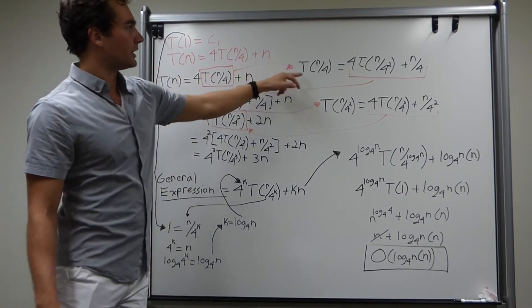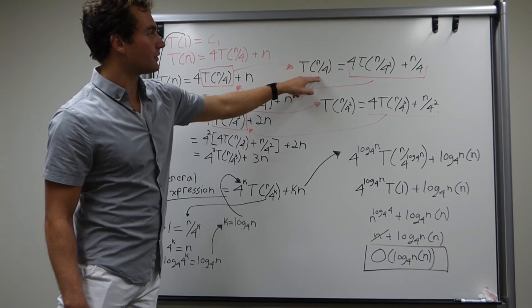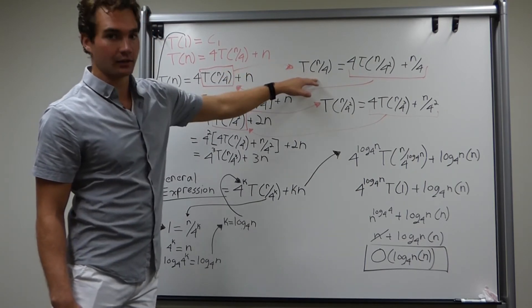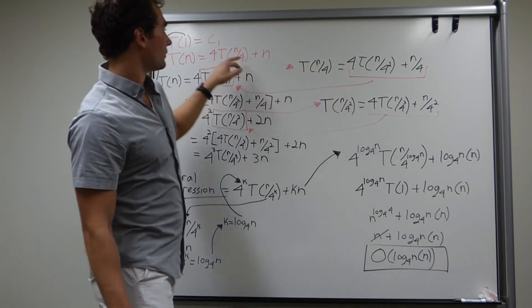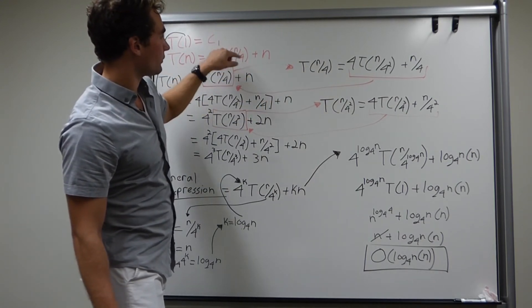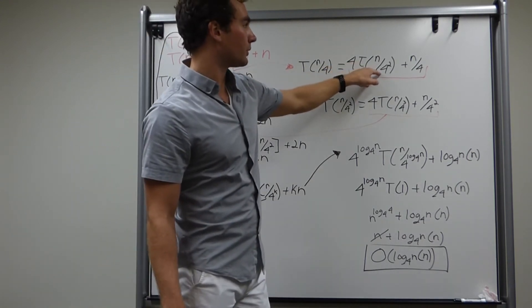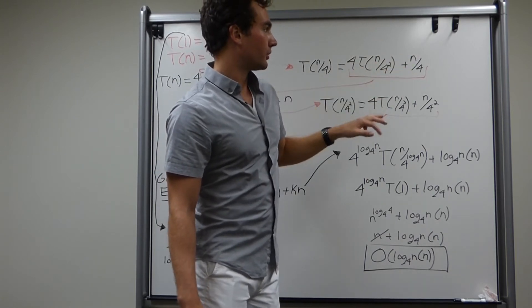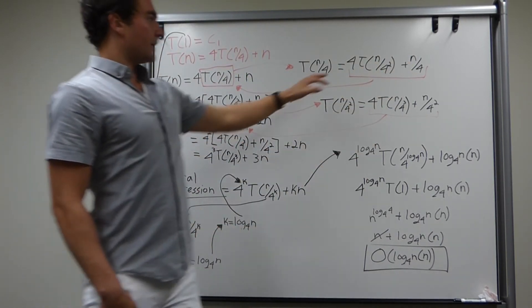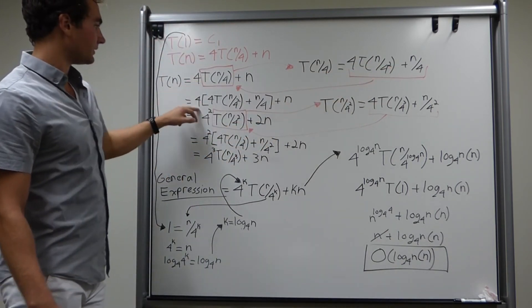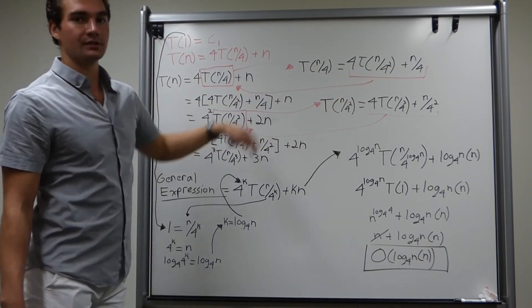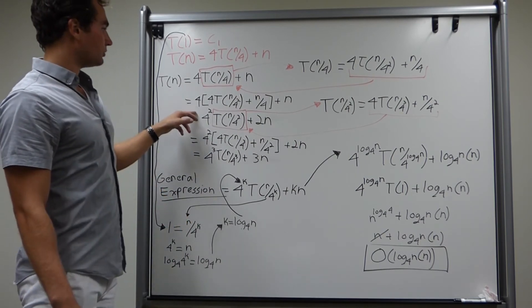We'll jump over here, and here we have T(n/4). So, every time you see n, you plug in n/4. For example, it would be 4T(n/4), where this n is, over 4, which gives you n/4 squared plus n/4. Don't forget to do it at the last step. It's very important. Then, we're going to plug all of this back into here and get this expression. I like using brackets to make it obvious.